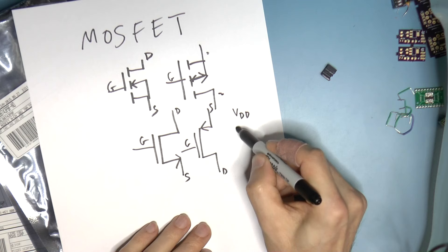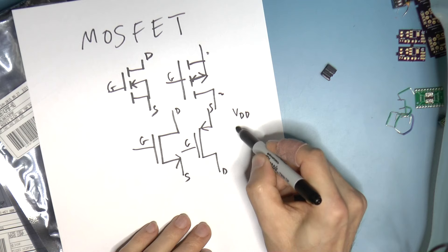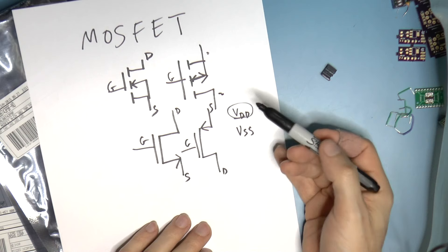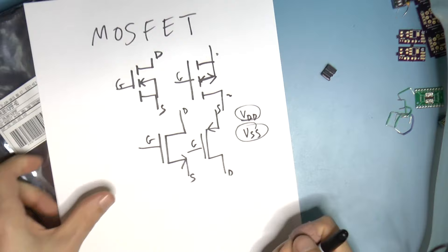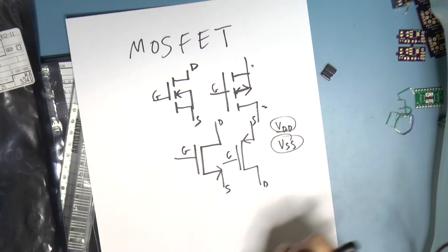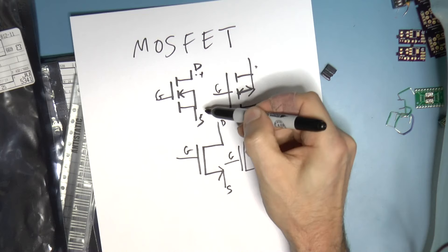If you've ever seen on a chip the labels VDD and VSS, that refers to the voltage that goes to the drain — i.e. power — and the voltage that goes to the source — i.e. ground. When it says 30 volts on here, that means the maximum amount of voltage that can go across here, typically from drain to source.